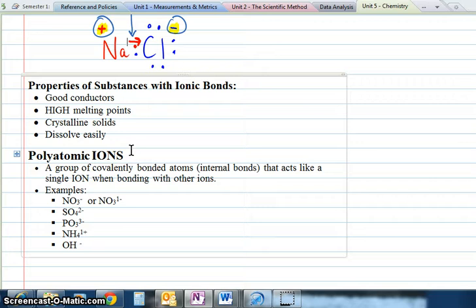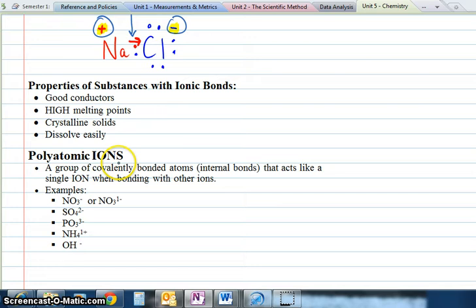There's this group of joined atoms called polyatomic ions. The internal bonds are covalent, but the whole piece acts like a single atom. I call them a clique of atoms, like a group of young ladies who all go to the bathroom together. These ions stick together through thick and thin.